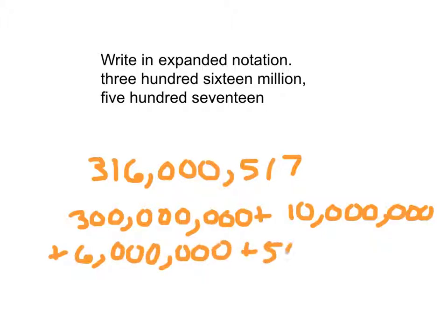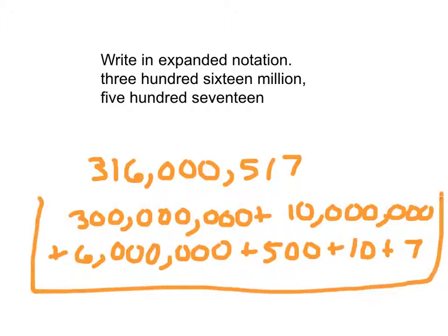And then finally, we have 500 plus 10 plus 7. And that there is how it is that we write in expanded notation. And that's your place value practice for today. Thank you.